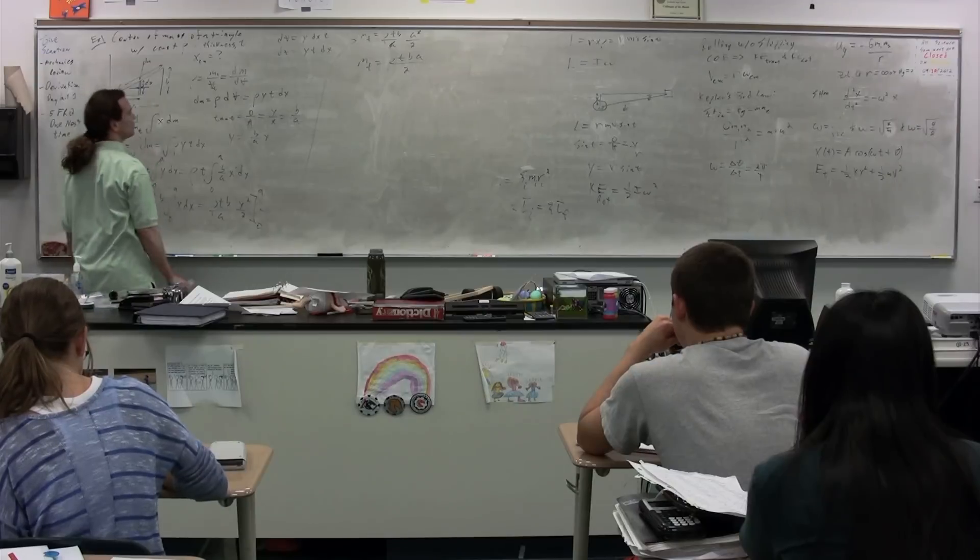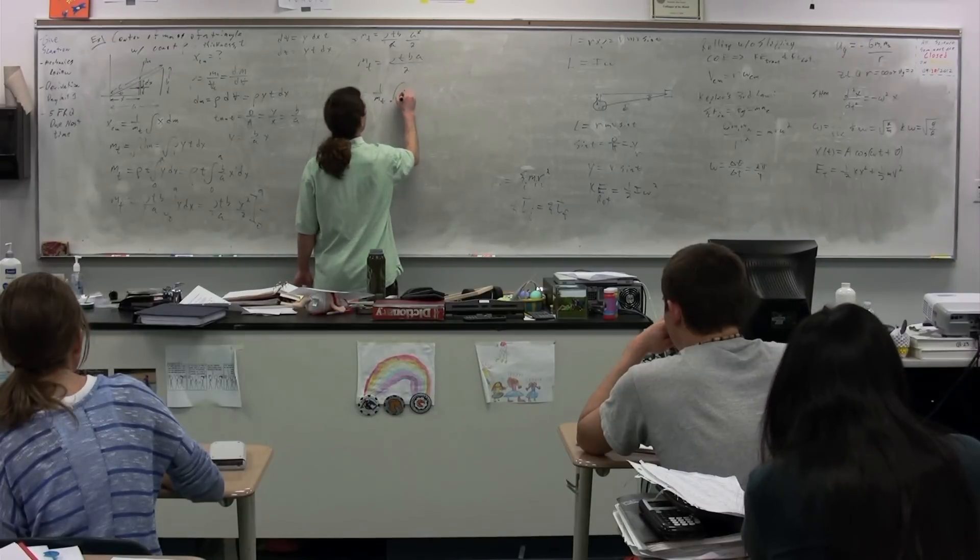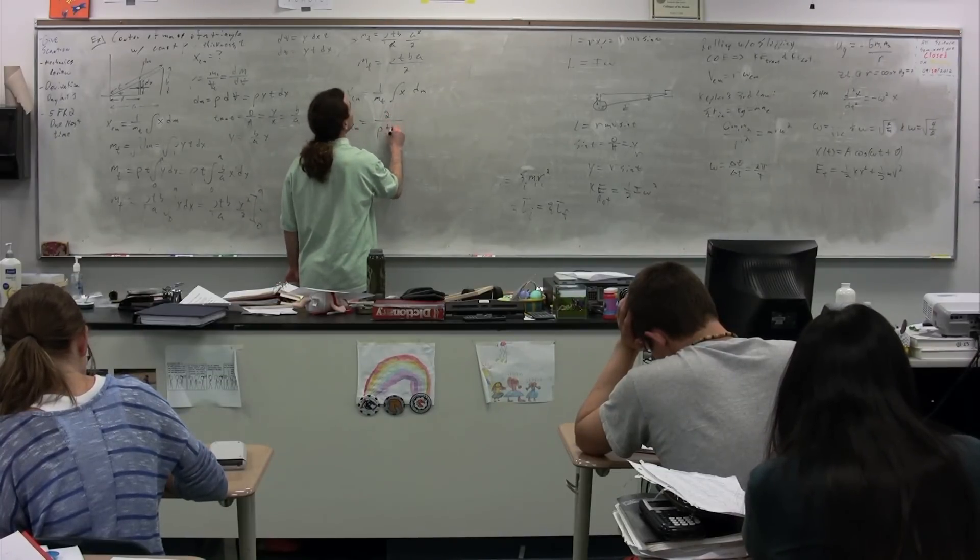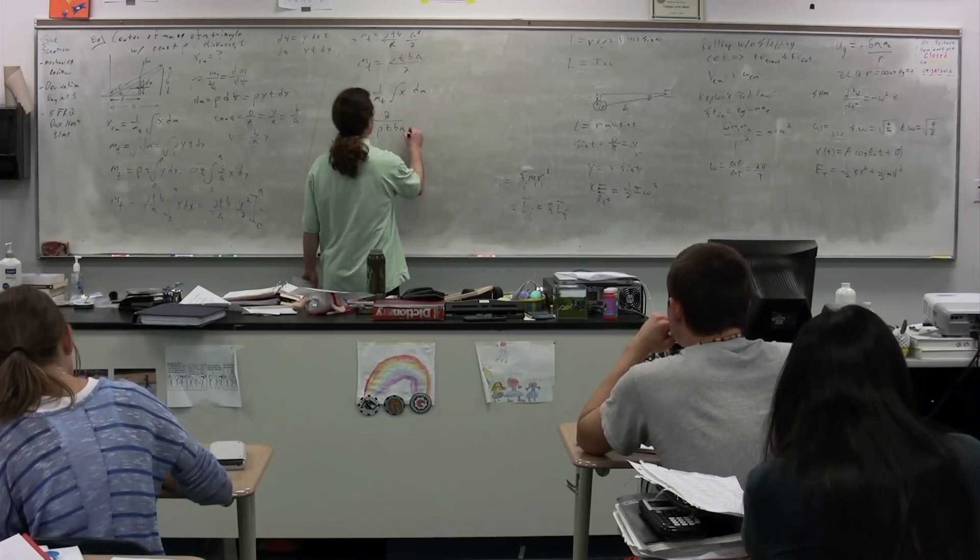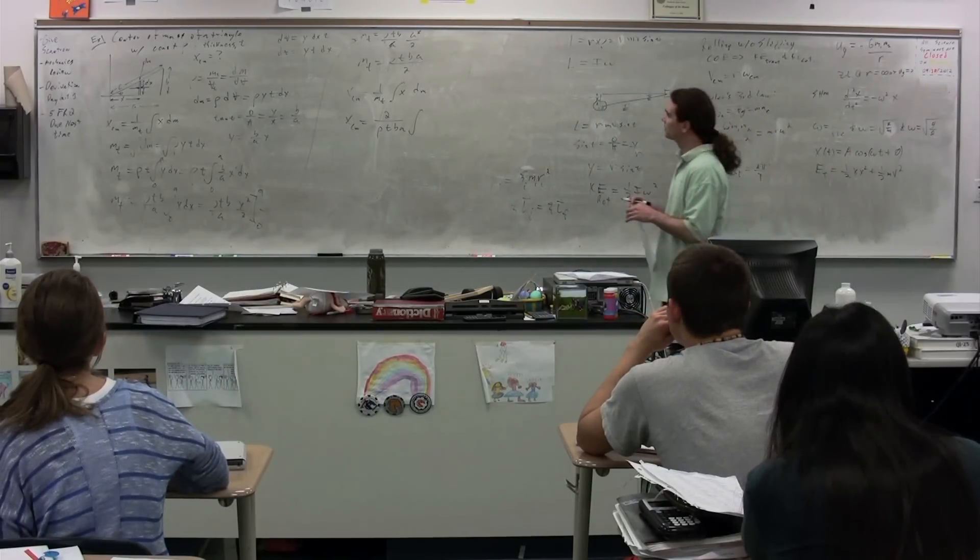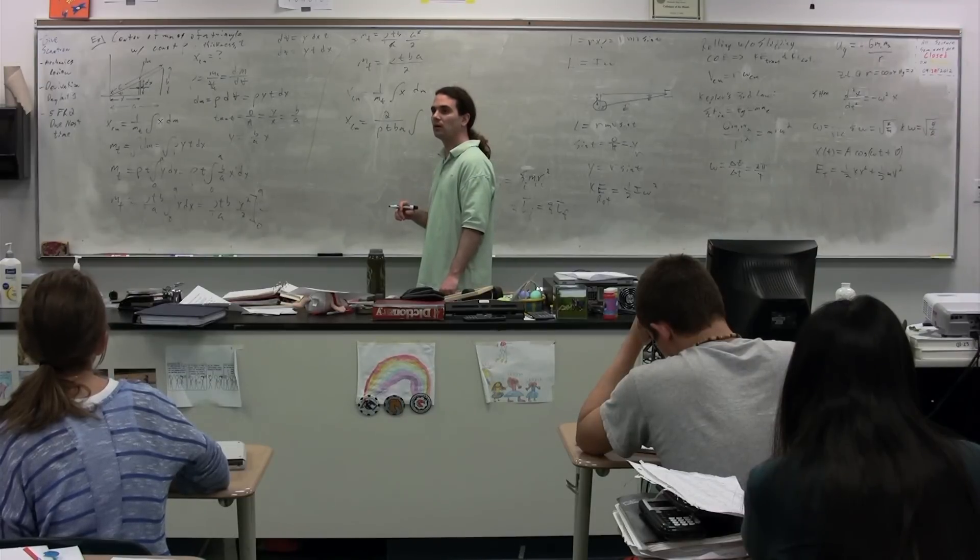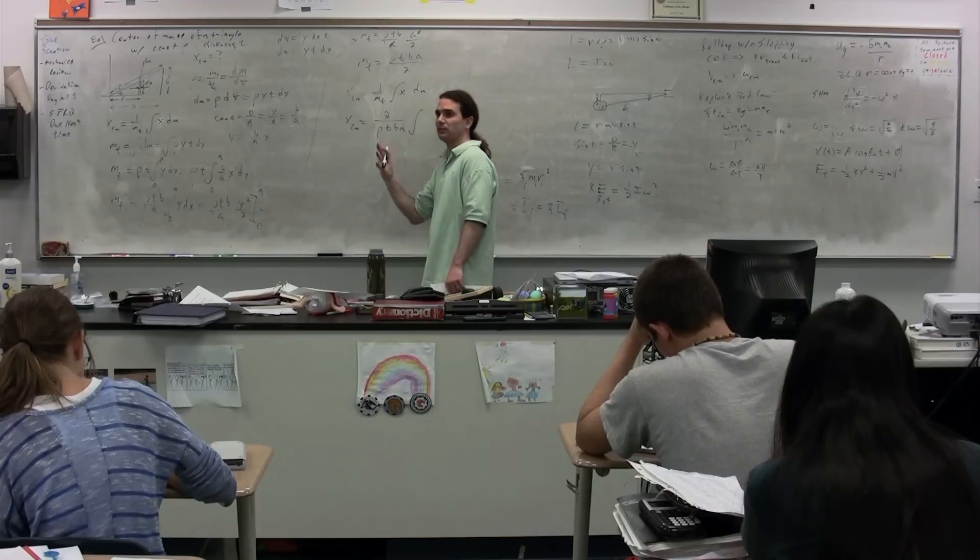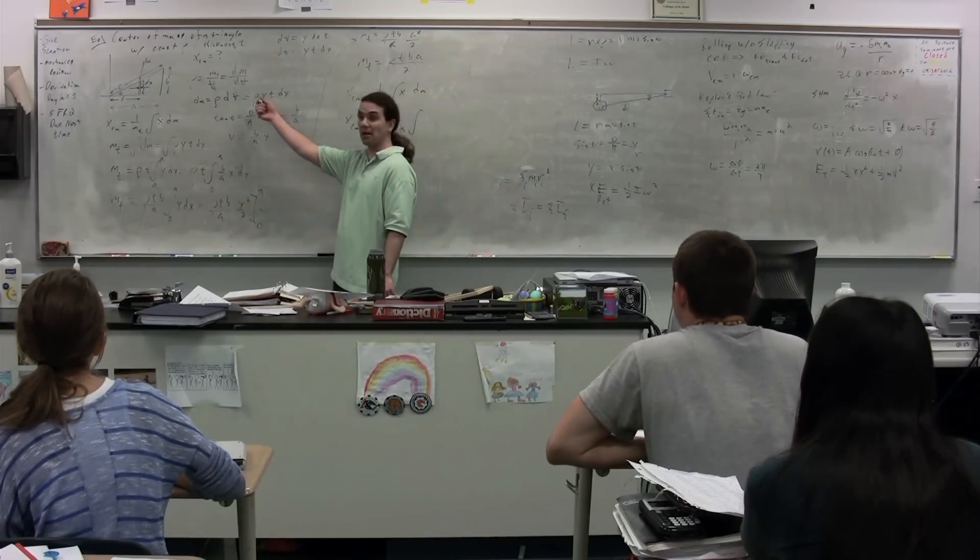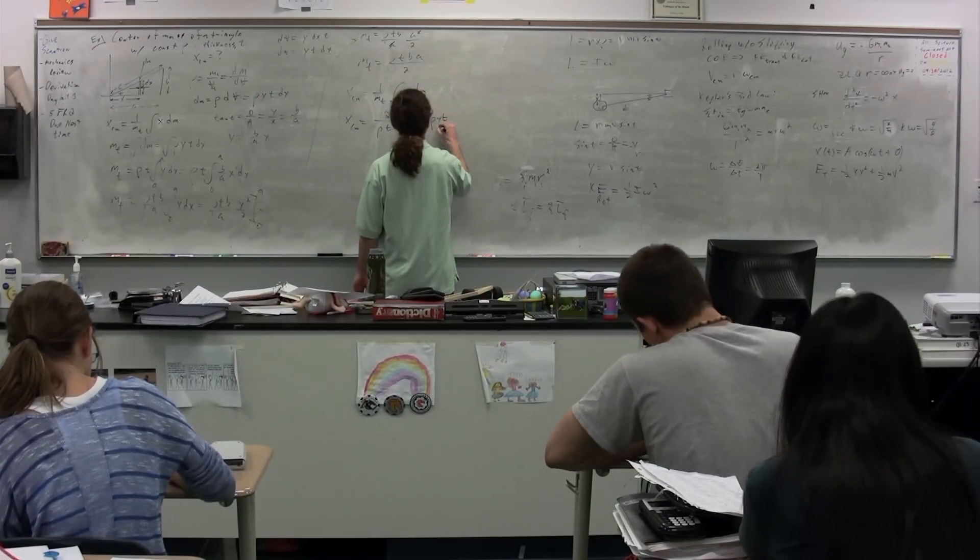So we have now the total mass. Coming back to the x center of mass, x center of mass, then, is going to be equal to one over the mass total, integral of x dm. We can substitute in our total mass. So we have two divided by rho t, b times a. Integral of, now what are we going to do with x dm, please? Zack? You're correct, except that we've already done something very helpful. We've already figured out what dm equals, so we can substitute rho y t dx for that. So we have x times rho times the thickness times y times dx.